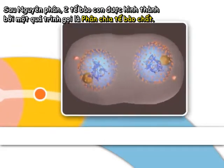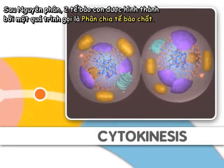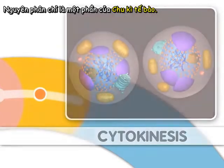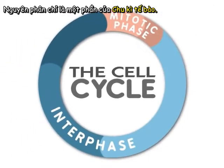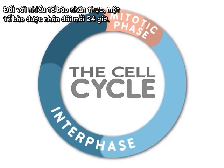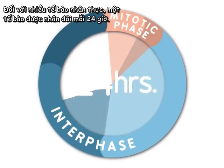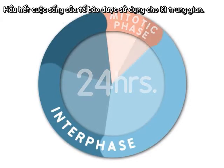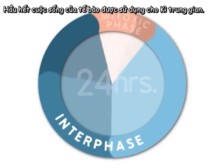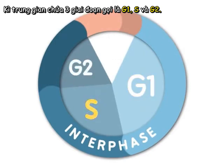After mitosis, two new cells are formed by a process called cytokinesis. Mitosis is only one part of what is called the cell cycle. For many eukaryotic cells, a cell is duplicated every 24 hours. Most of the life of a cell is spent in interphase, which consists of three stages called G1, S, and G2.